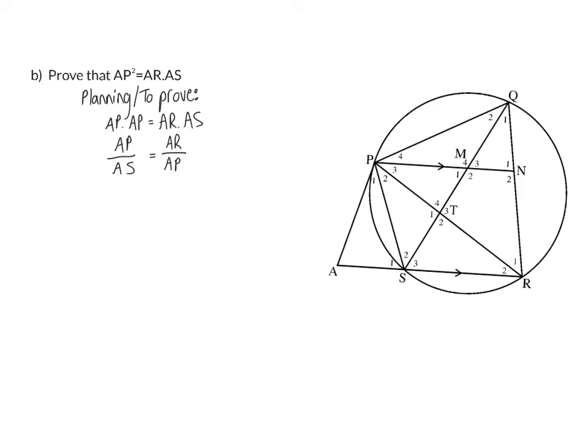I'm going to start off by expanding the left to AP multiplied by AP, then reverse the cross-multiplication. I'm going to divide on the right with one of the APs and divide on the left with the AS. From here, I need to find my two triangles. On the left, I have APS, three letters. On the right, I have ARP, also three letters. APS does form a triangle, and ARP also forms a triangle. Now that my planning is done, I know where to start, and that is by proving these two triangles similar.